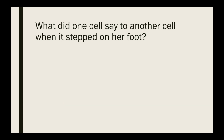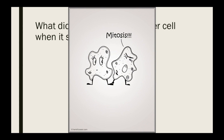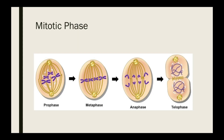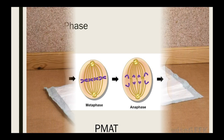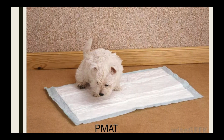Here's a good old joke: what did one cell say to another cell when it stepped on her foot? Ow, mitosis! The mitotic phase is broken down into four separate phases: prophase, metaphase, anaphase, and telophase. A good way to remember these four phases in order is PMAT — using the first letters of each word. In the veterinary technician world, you can picture a PMAT like a pee-pee mat.